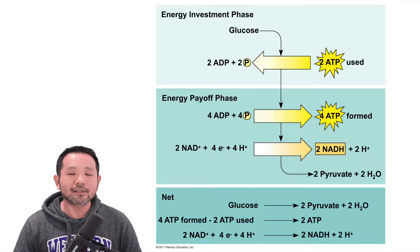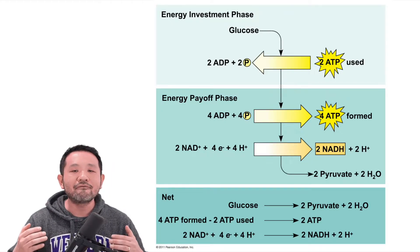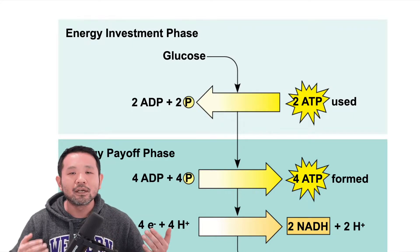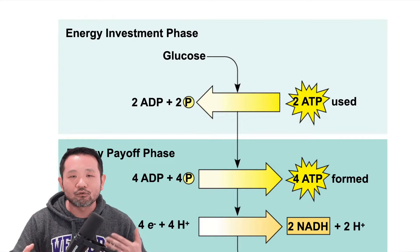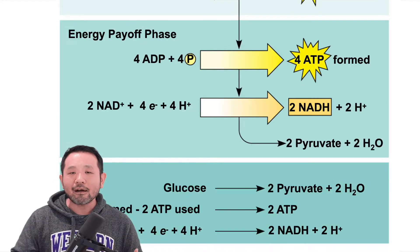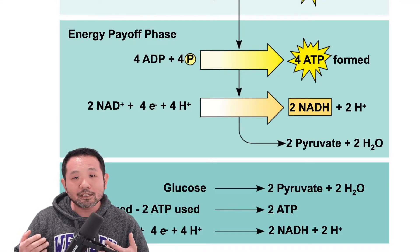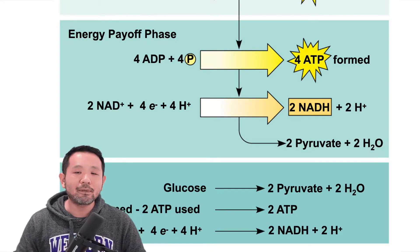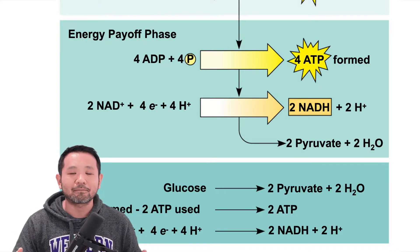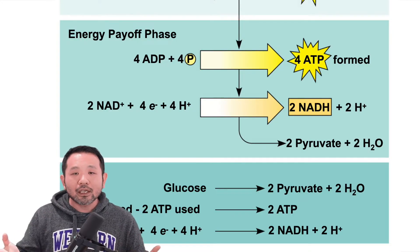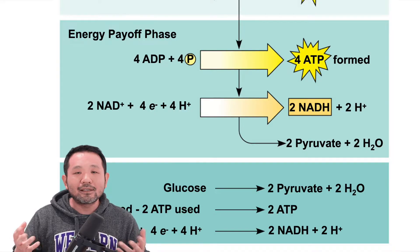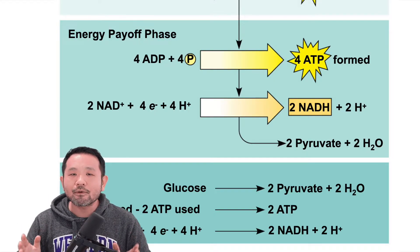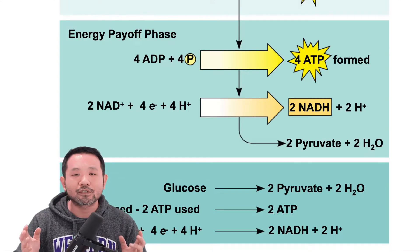The term glycolysis refers to the breakdown of glucose, or the cutting of glucose into two equal molecules that we call pyruvate or pyruvic acid. In order to perform glycolysis, there is an investment phase where the cell needs to spend two ATPs to get the ball rolling. But then during the payoff phase, we get four ATPs back, meaning that you have a net gain of two ATPs.